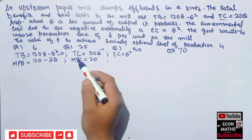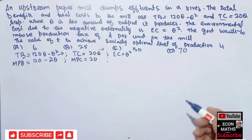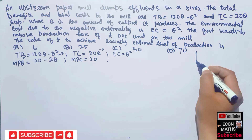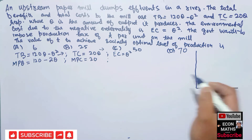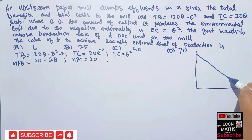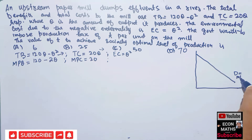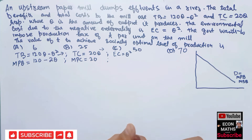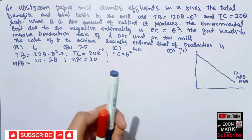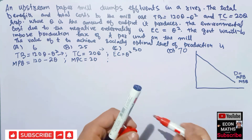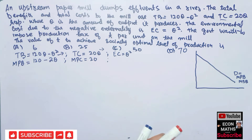Since we have marginal private benefit and marginal private cost, we can show this graphically. The intercept of the marginal private benefit curve is 120 — this is our demand curve, also called the marginal private benefit curve, which is also equal to the marginal social benefit curve. Marginal private cost is 20, which is our supply curve.